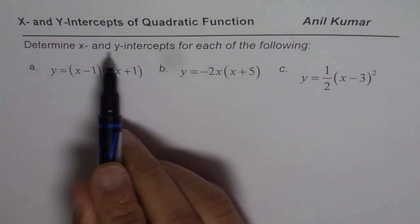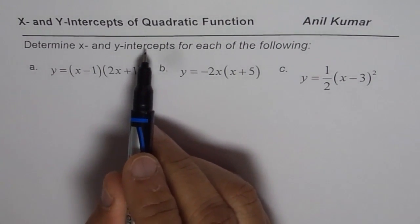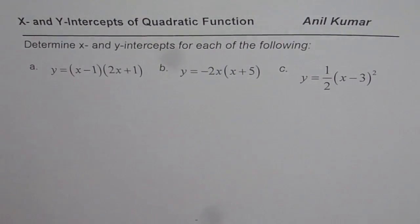To find x and y-intercepts what is important to understand is that for y-intercept x should be 0, for x-intercept y should be 0.